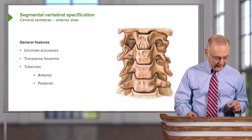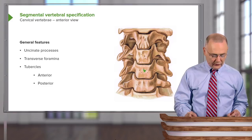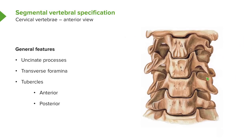Lastly, there are tubercles associated with the transverse processes of cervical vertebrae. Best seen at the transverse portion, we have a posterior tubercle and an anterior tubercle.